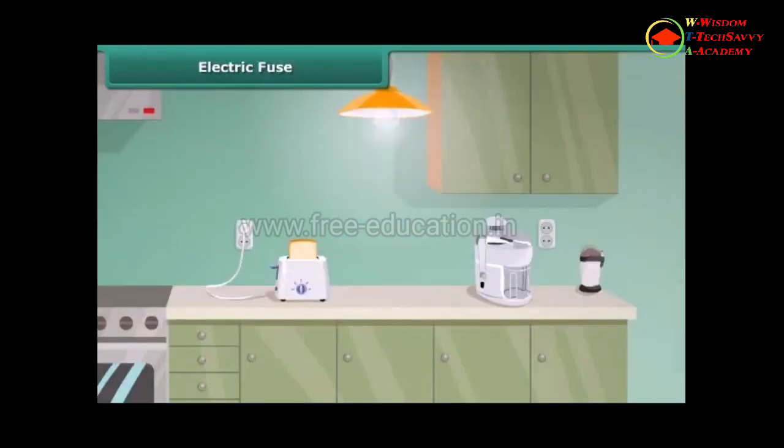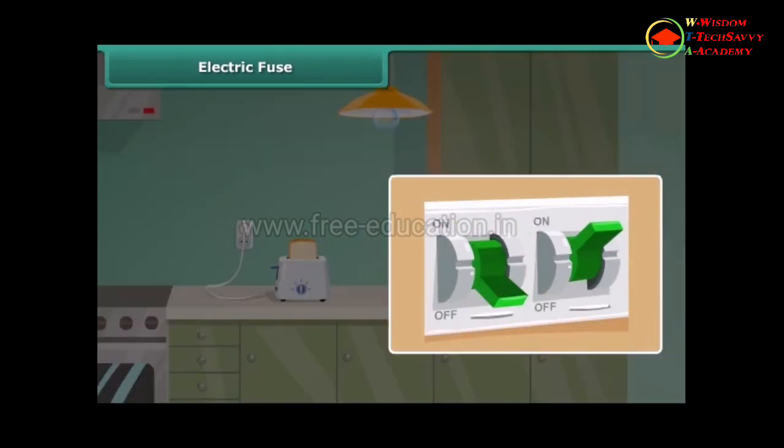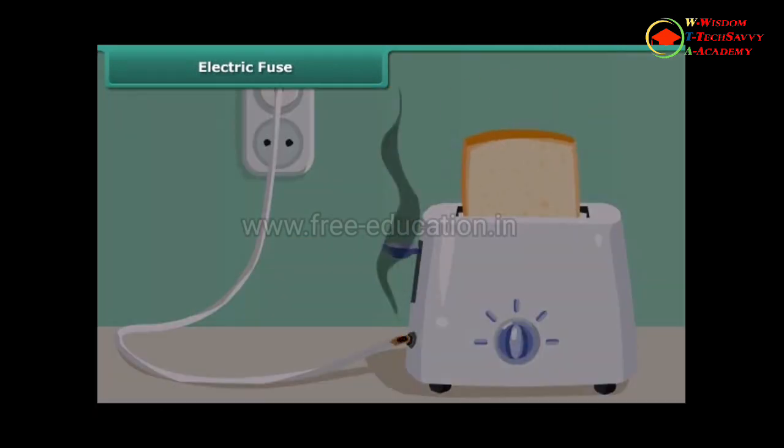Electric fuse. Sometimes you may have seen the situation in your house that the fuse is blown off and the electric supply is cut off. Can you tell the reason for this? This is because of the enormous amount of heat produced wherever there is an excess flow of current due to short circuiting, overloading, or insulation failures of appliances.